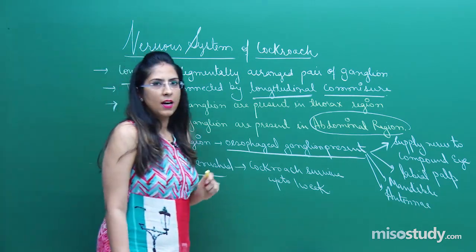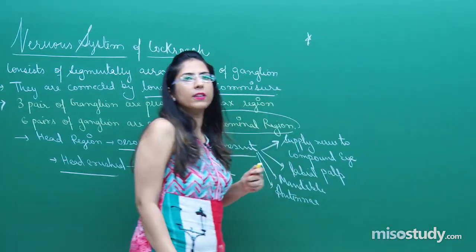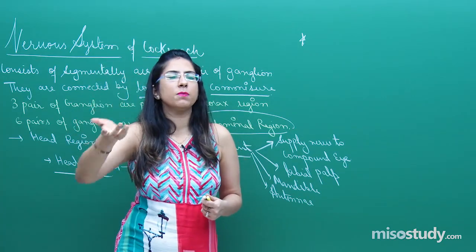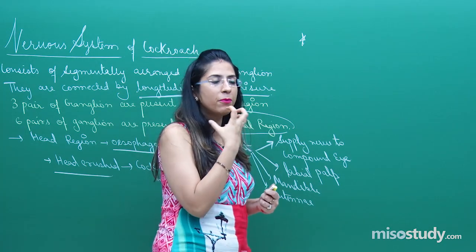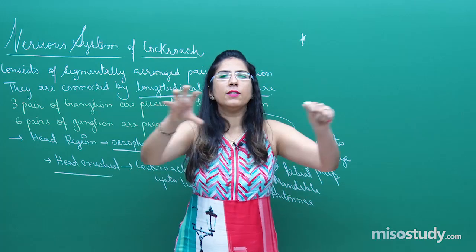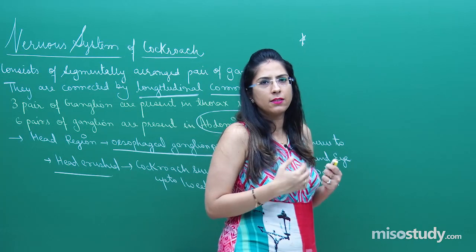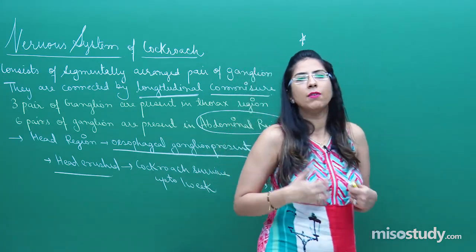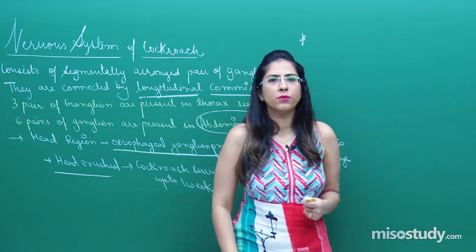Sensory organs are also present in cockroaches — on the antennae present on the head, and on the labial palp which helps in holding food. These sensory organs help in detecting food. Cockroaches are active at night — they are nocturnal — so they have a well-developed sensory system.